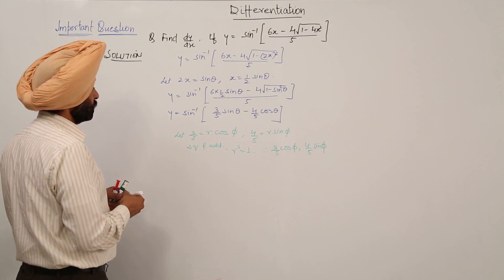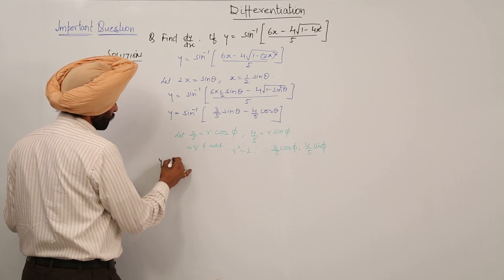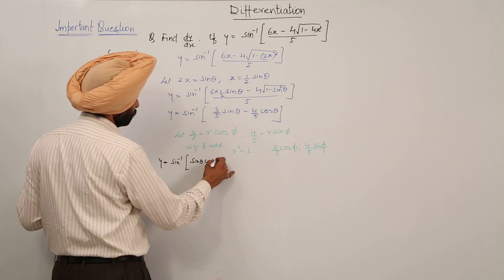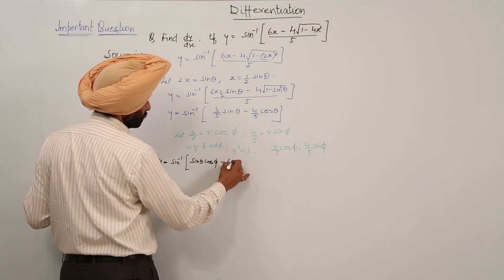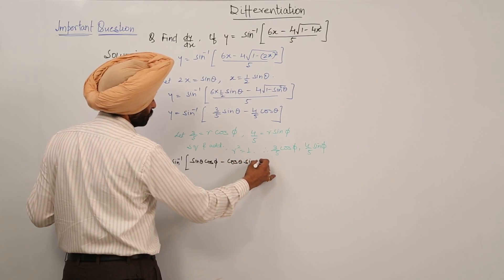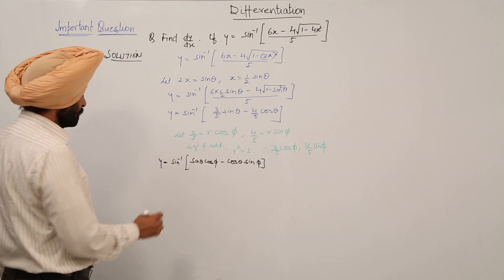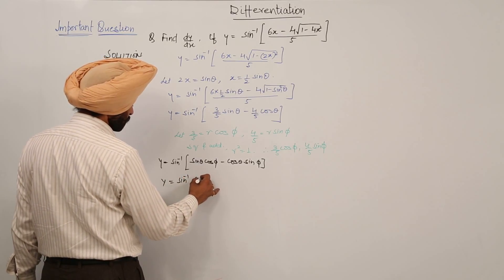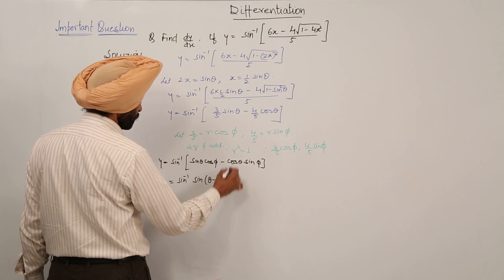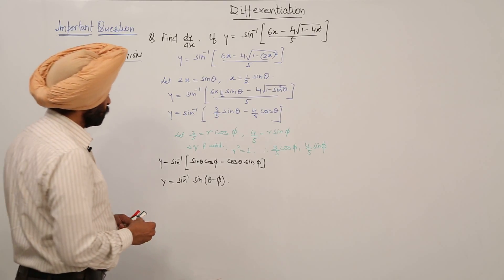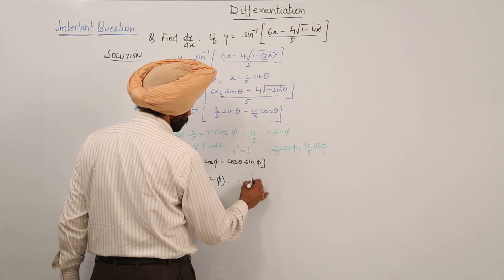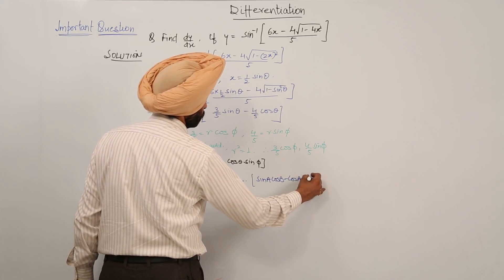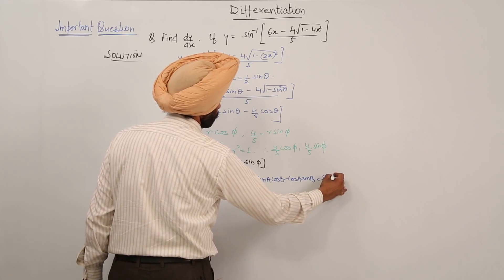So the question converts to y is equal to sin inverse of (sin θ cos φ minus cos θ sin φ). Using the identity sin A cos B minus cos A sin B equals sin(A minus B), this gives y is equal to sin inverse of sin(θ minus φ).